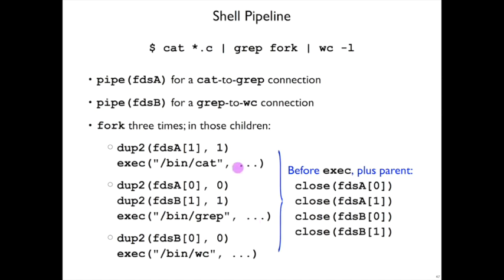And in fact, what that means is after all the dup2s, before the execs, just close all of the pipes that are pipe ends that are referred to by the file descriptors A and B arrays, and the parent needs to do that too. So I really mean that there are 16 calls to close that need to happen to get this pipeline properly set up.